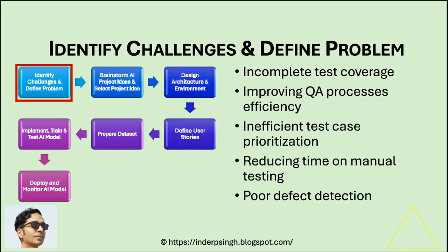Phase 1: Identify challenges in your process and define the problem. Even before brainstorming AI project ideas, you should identify the difficulties or pain points in your software development process. Common challenges might include incomplete test coverage, improving the efficiency of your quality assurance processes, inefficient test case prioritization, reducing time spent on manual testing, or poor defect detection.